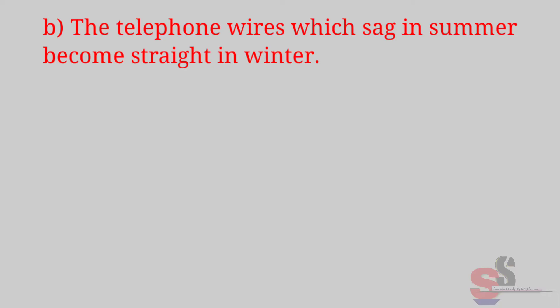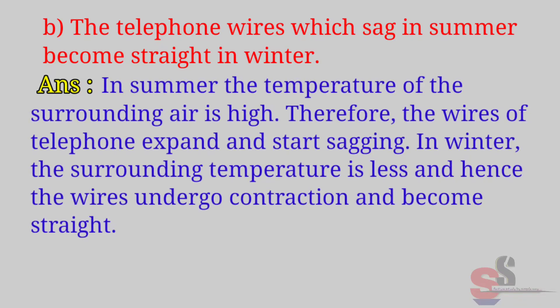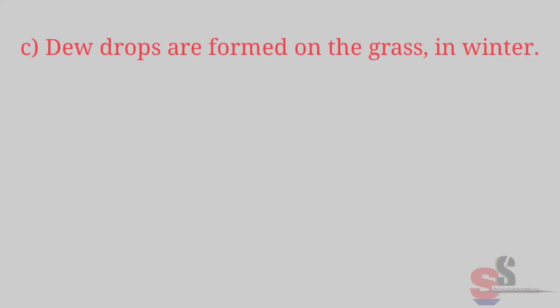(b) The telephone wires which sag in summer become straight in winter. Answer: In summer the temperature of the surrounding air is high, therefore the telephone wires expand and start sagging. In winter, the surrounding temperature is lower and hence the wires undergo contraction and become straight.